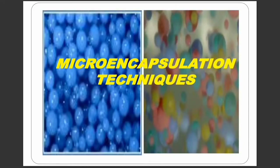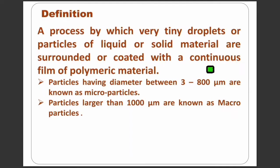Today we will discuss microencapsulation techniques. Microencapsulation is a process by which very thin droplets or particles of liquid or solid material are surrounded or coated with a continuous film of polymeric material. You can see in this diagram that the black color shows the polymer coat surrounding the core.